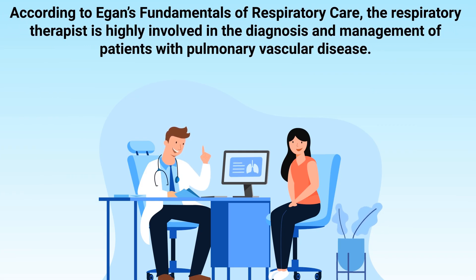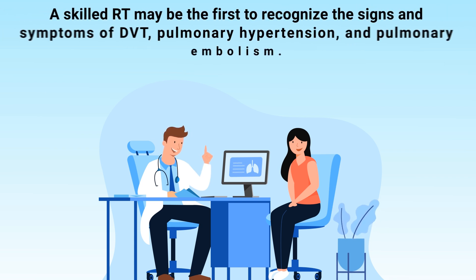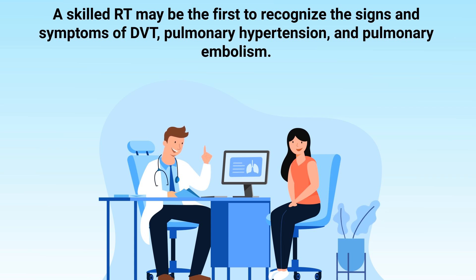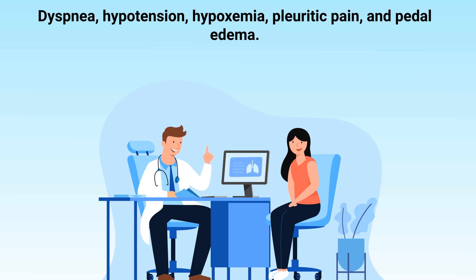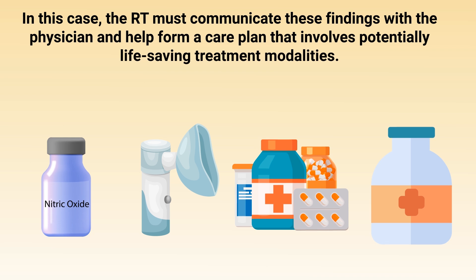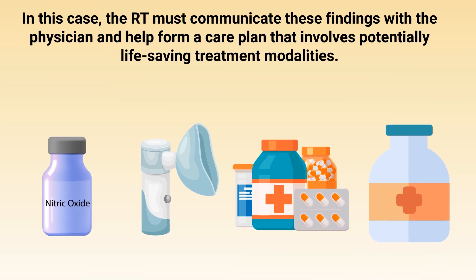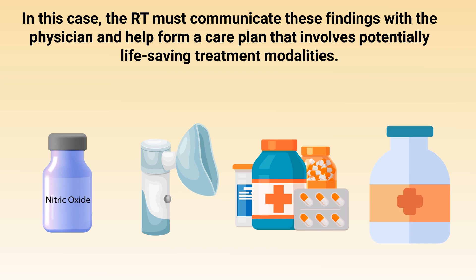According to Egan's Fundamentals of Respiratory Care, the respiratory therapist is highly involved in the diagnosis and management of patients with pulmonary vascular disease. A skilled respiratory therapist may be the first to recognize the signs and symptoms of deep venous thrombosis, pulmonary hypertension, and pulmonary embolism. Some examples include dyspnea, hypotension, hypoxemia, pleuritic pain, and pedal edema. In this case, the respiratory therapist must communicate these findings with the physician and help form a care plan that involves potentially life-saving treatment modalities.